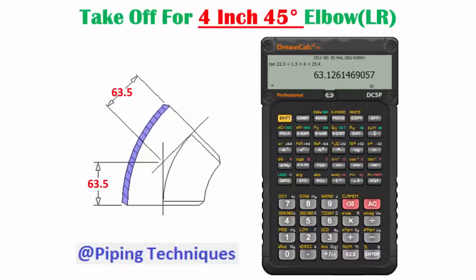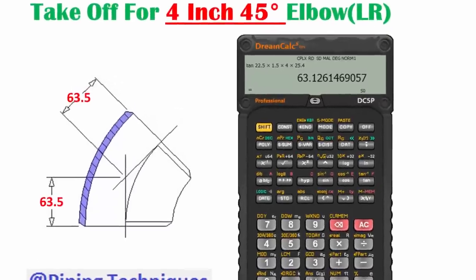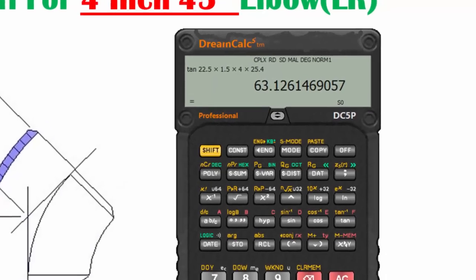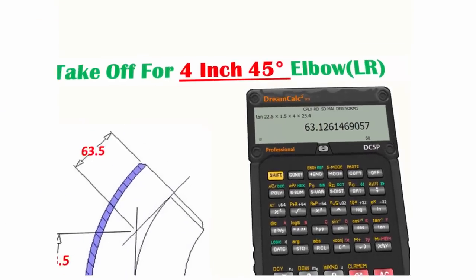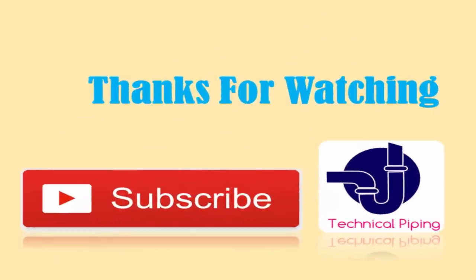For example, 4 inch 45 degree elbow takeoff calculation using scientific calculator. Enter the diameter of elbow value in inches as the given formula shown in picture.